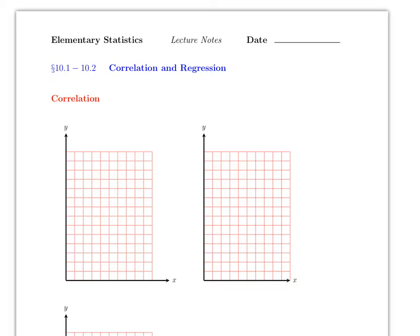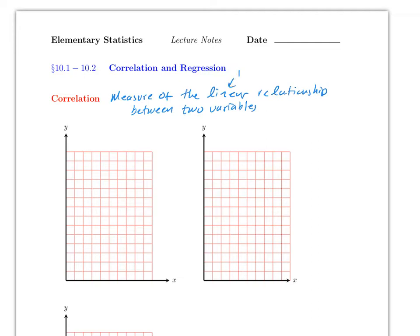This video covers sections 10.1 and 10.2 on correlation and regression. Correlation is the measure of the linear relationship between two variables, x and y — the same x and y you have in algebra.